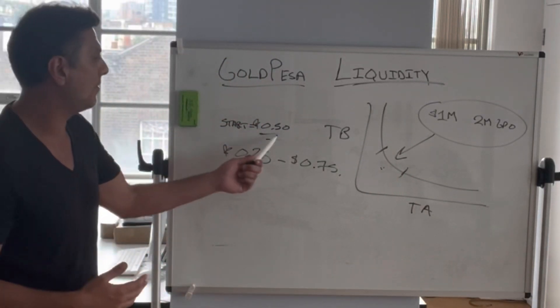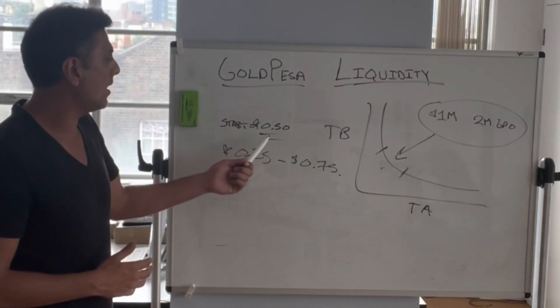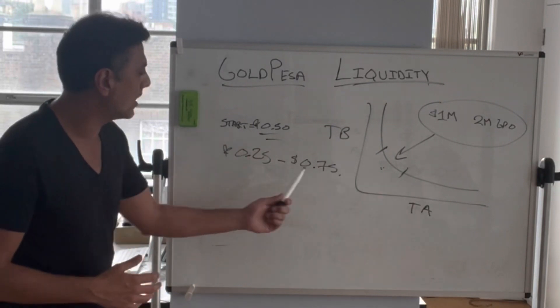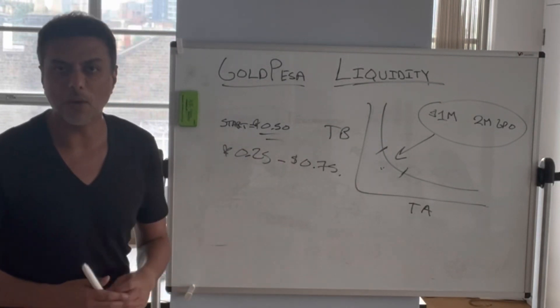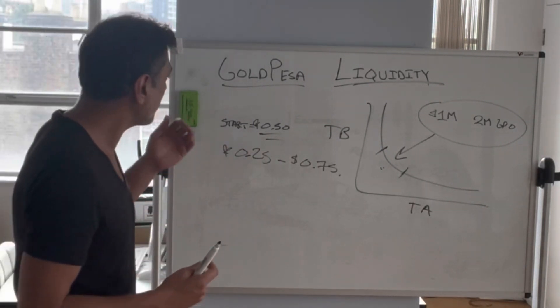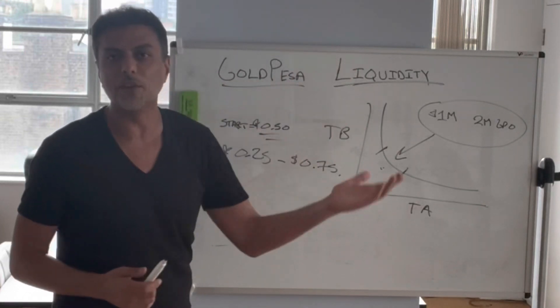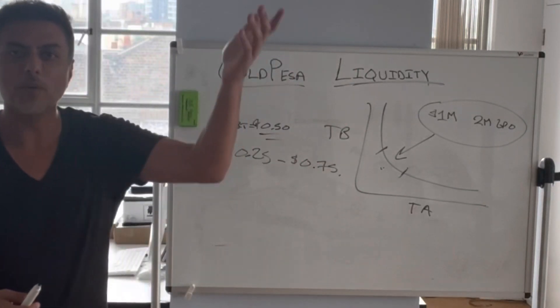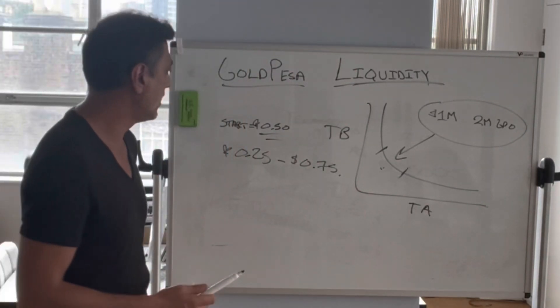And we know we're starting at $0.50. So why not concentrate the liquidity in the price range that we are trading at, rather than providing liquidity from zero to infinity when the price hasn't even reached there yet?